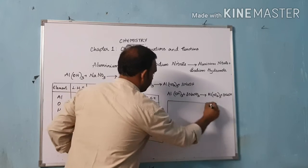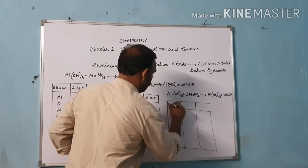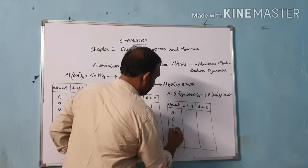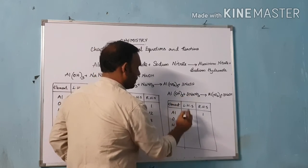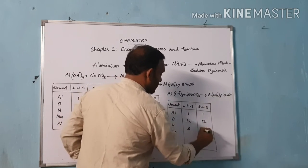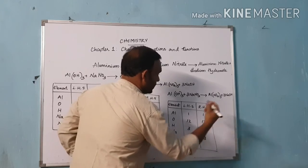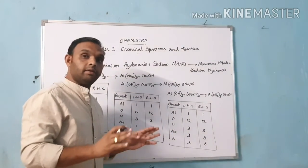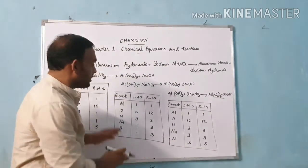Let us now check the number of atoms in this equation. Aluminium: 1 on LHS and 1 on RHS. Oxygen: 3 plus 9 = 12 on LHS, and 9 plus 3 = 12 on RHS — balanced. Hydrogen: 3 on LHS and 3 on RHS — balanced. Sodium: 3 on LHS and 3 on RHS — balanced. Nitrogen: 3 on LHS and 3 on RHS — balanced. Since all the atoms of all elements are equal on the reactant side and product side, this is a balanced equation. I hope this is clear to all of you.